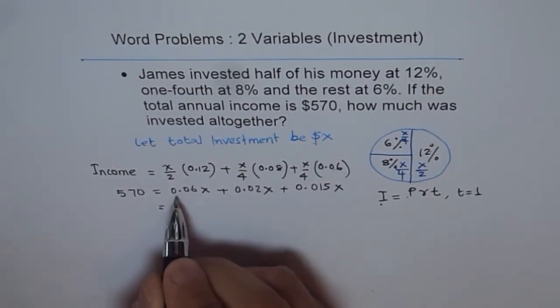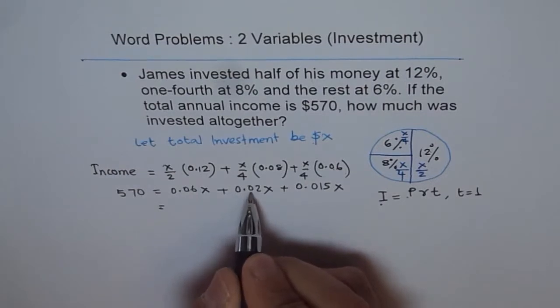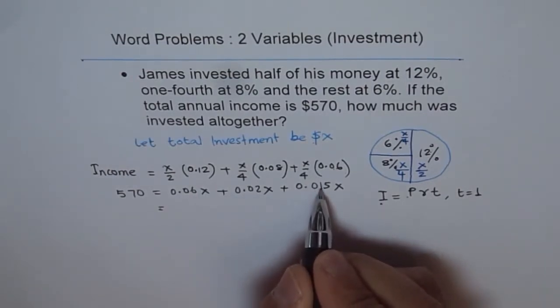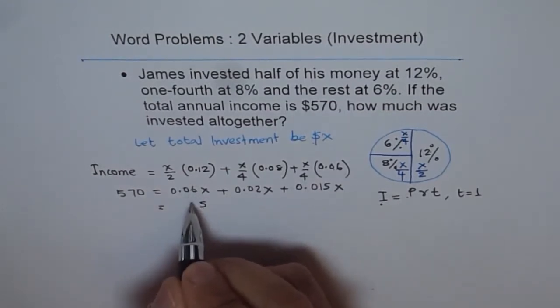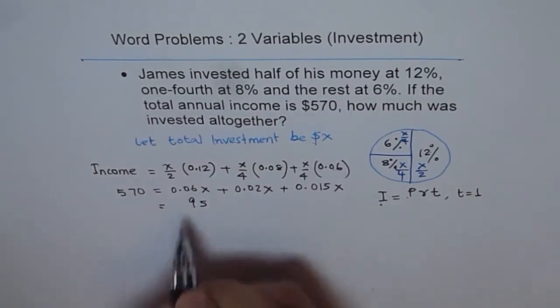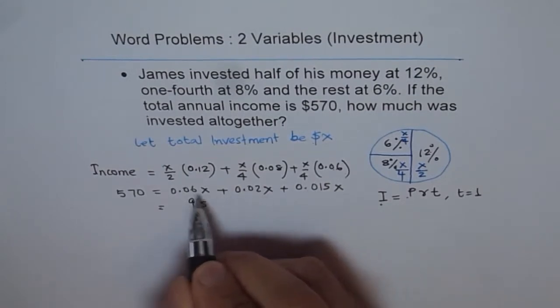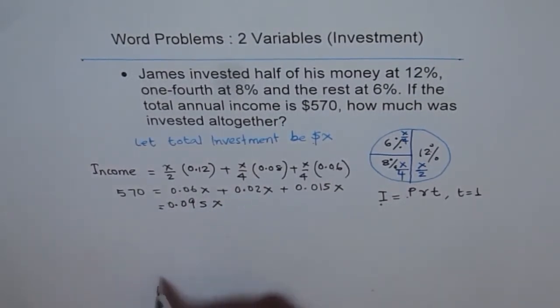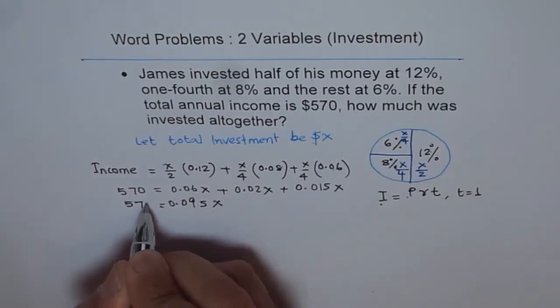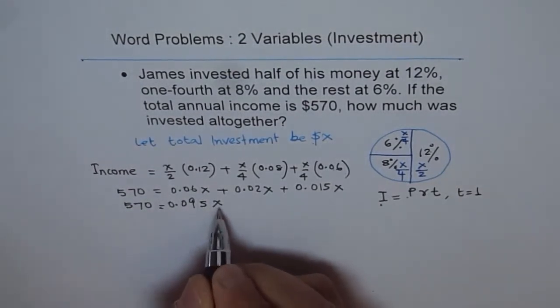Now we can combine these quantities, that is 0.06 plus 0.02 plus 0.015, so we get 5 and 1 plus 2 is 3, 3 plus 6 is 9. We get 0.095X, and that is equal to 570. Now from here what is X?